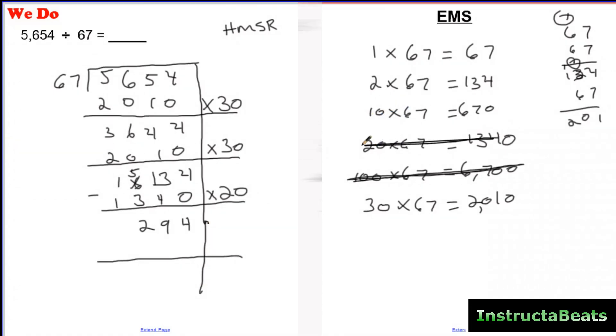I can't use 1,340 anymore. 670 is too big. So I'm going to go ahead and use 134, which I put is two groups. And that's going to be 134 right there. I'm going to subtract. I'm going to get 160 left.